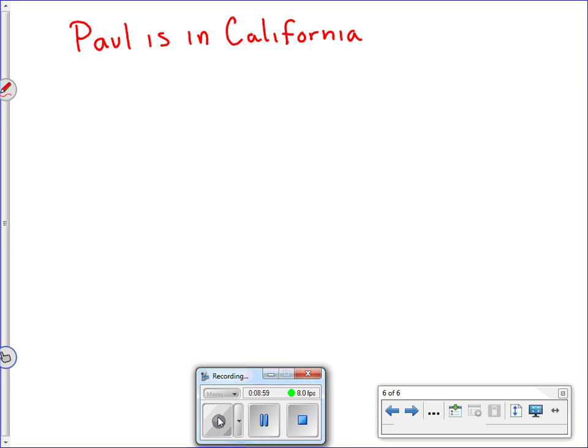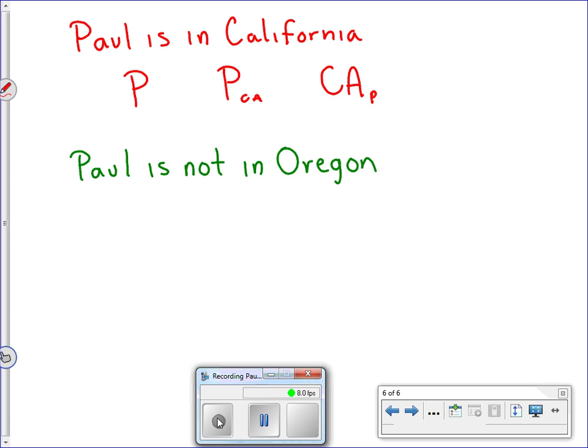So I have Paul is in California. All right? So I can create my own symbols, as long as I can understand it, right? So I could just use P to represent this statement. I could use P with a little tiny CA there that stands for Paul who's in California. Okay? I could do California with a little P down here. It stands for Paul's in California. I don't care. But there's a lot of symbols, a lot of different ways that we could write it.